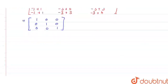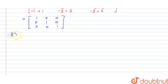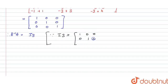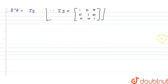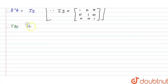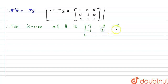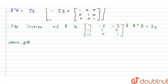This can be written as I₃. Therefore A inverse × A = I₃, since I₃ is the matrix [[1, 0, 0], [0, 1, 0], [0, 0, 1]]. This is what we had to prove. Therefore the inverse of A is [[7, −3, −3], [−1, 1, 0], [−1, 0, 1]] and A inverse into A is equal to I₃. Hence proved. Thank you.